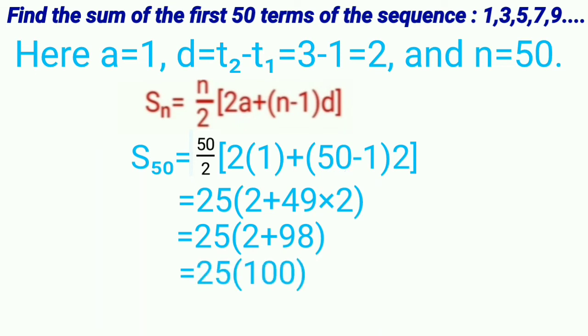That is equal to 25 into 100. 2 plus 98 is 100. Therefore, sum of 50 numbers is equal to 2,500.